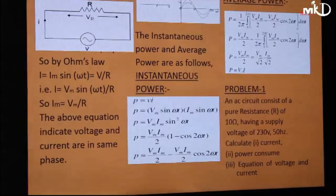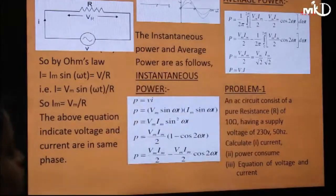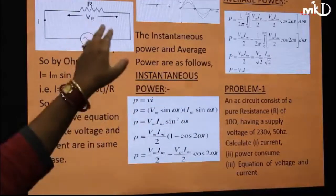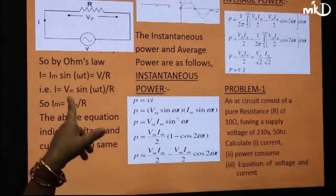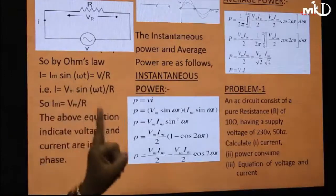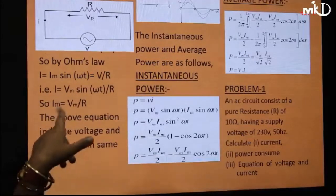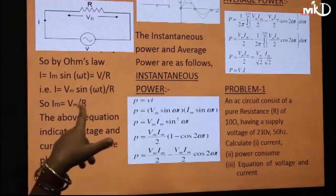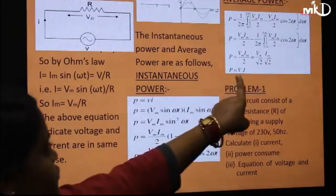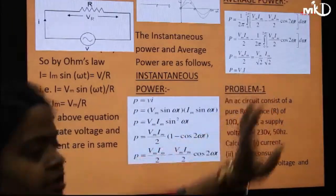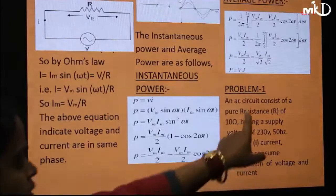To conclude, in a purely resistive circuit: I and V are both in phase, Im = Vm/R, and P = V × I. Now let's do a problem.